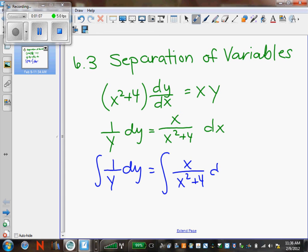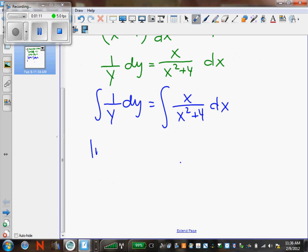So I have two integration problems. This will be natural log of the absolute value of y equals, now I have to integrate this side of the equation. My u will equal x squared plus 4. The derivative of that is 2x dx. So I have 1 half du equals x dx.